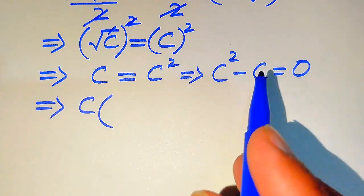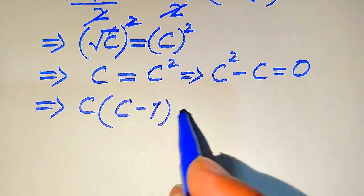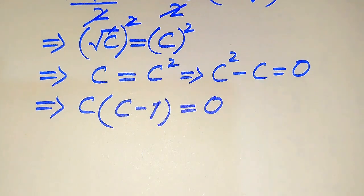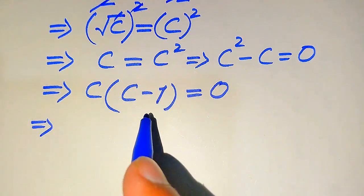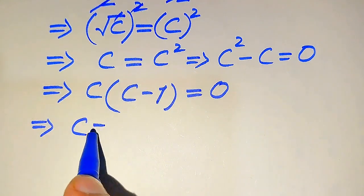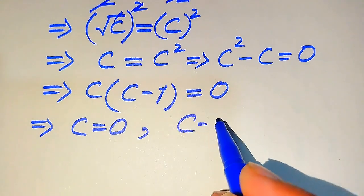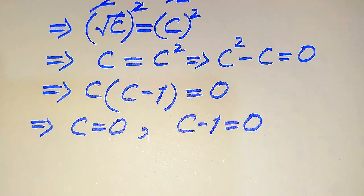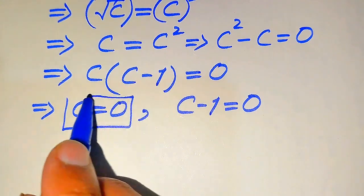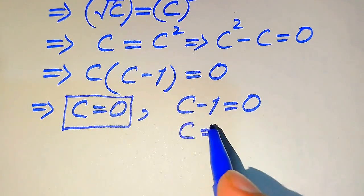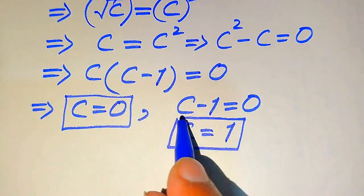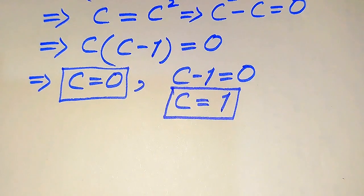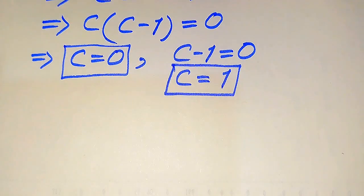We move C to the right-hand side to get C squared minus C equals 0. Both terms involve C, so we factor out C to get C times (C minus 1) equals 0. This gives two cases: the first case is C equals 0, and the second case is C minus 1 equals 0, giving C equals 1. So from Method 1 we get two roots: C = 0 and C = 1.